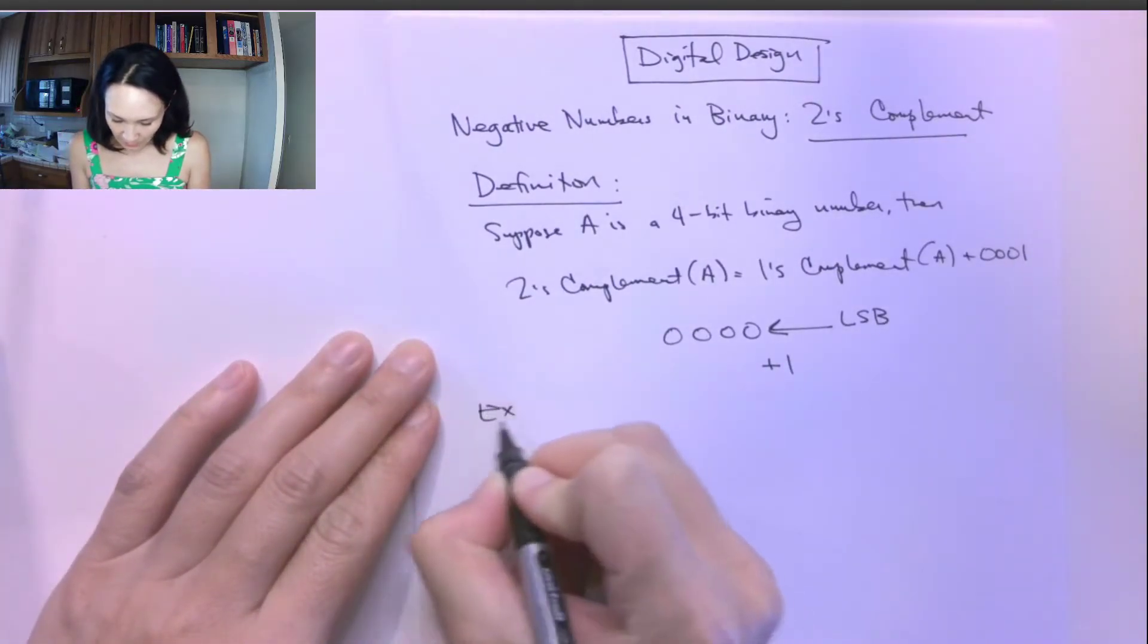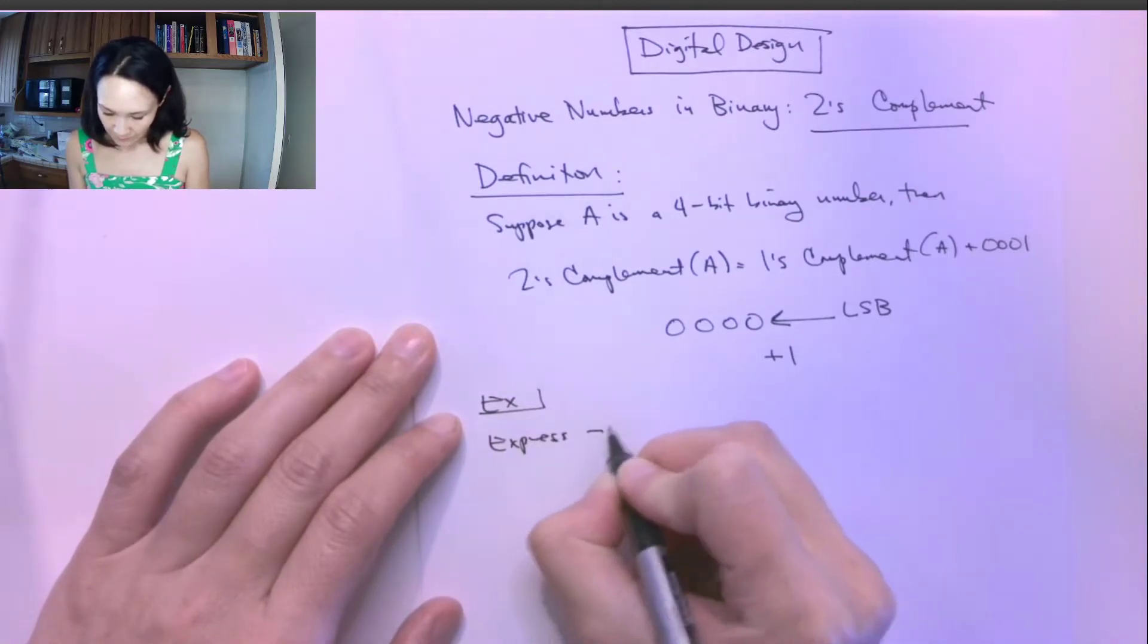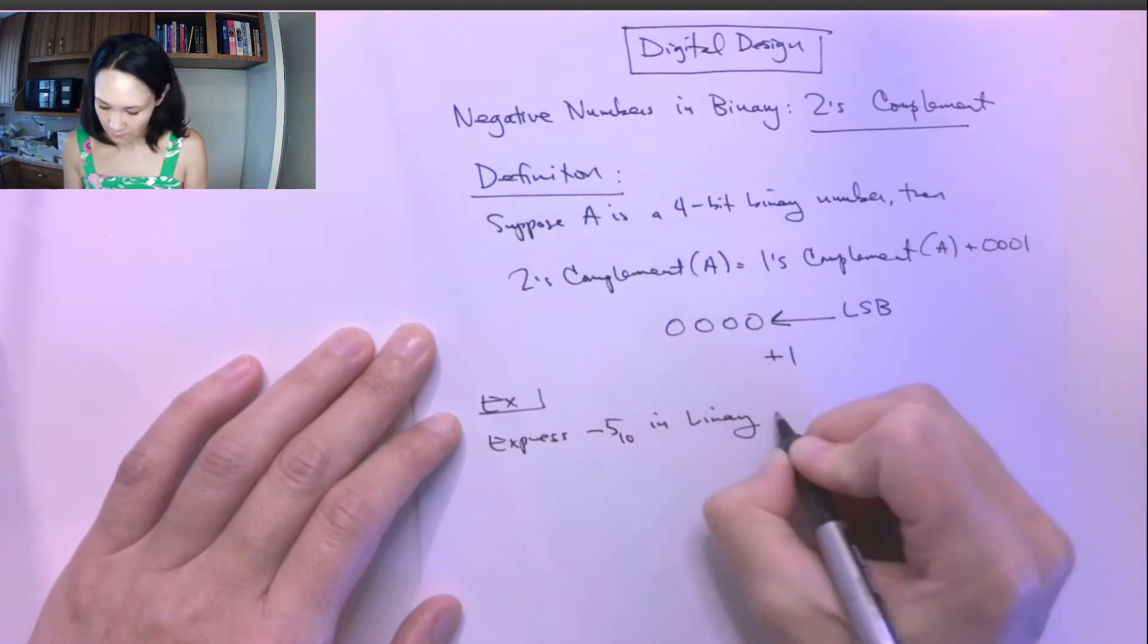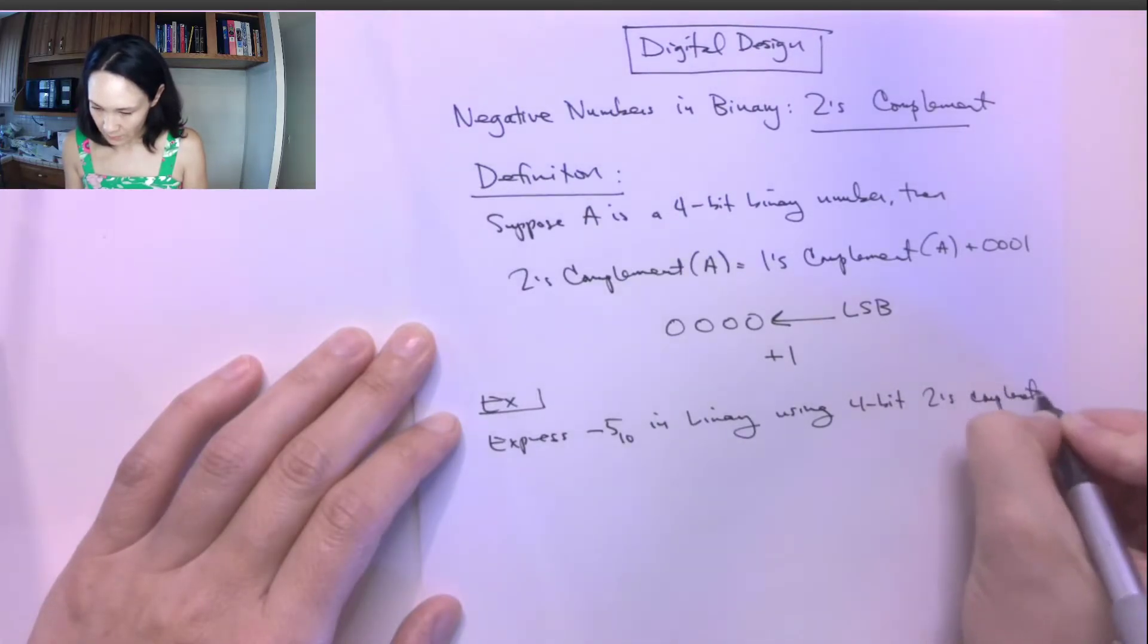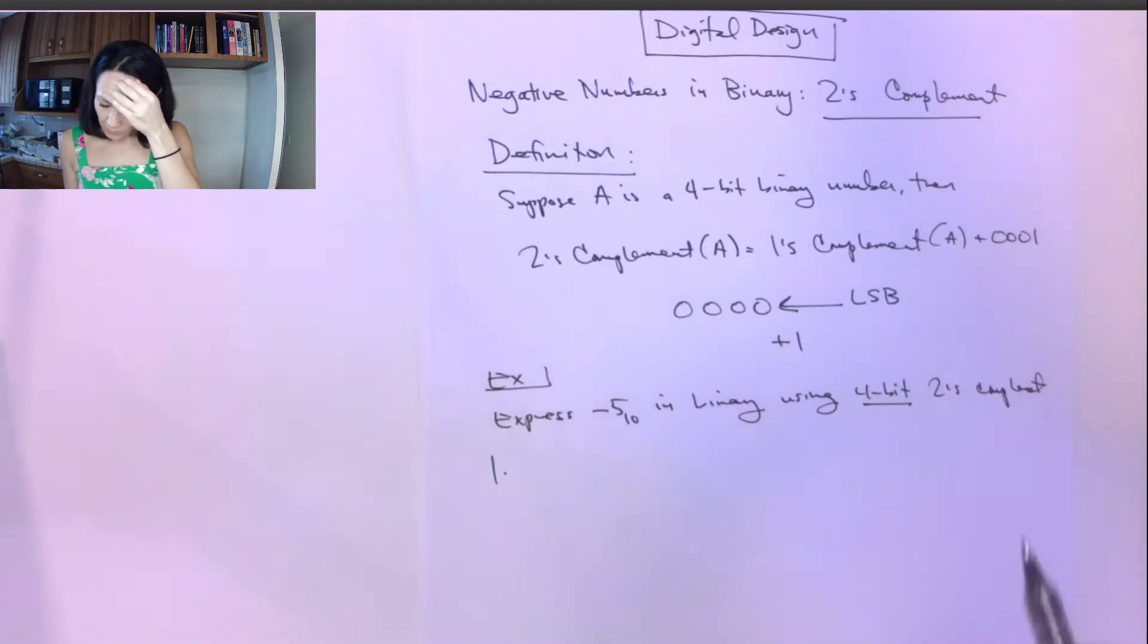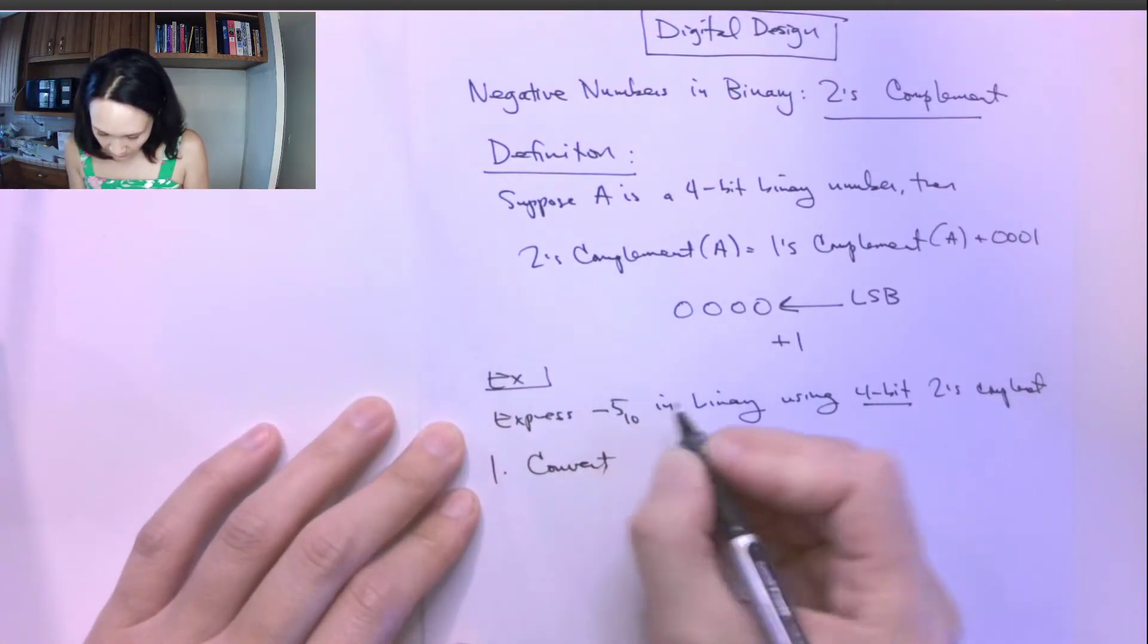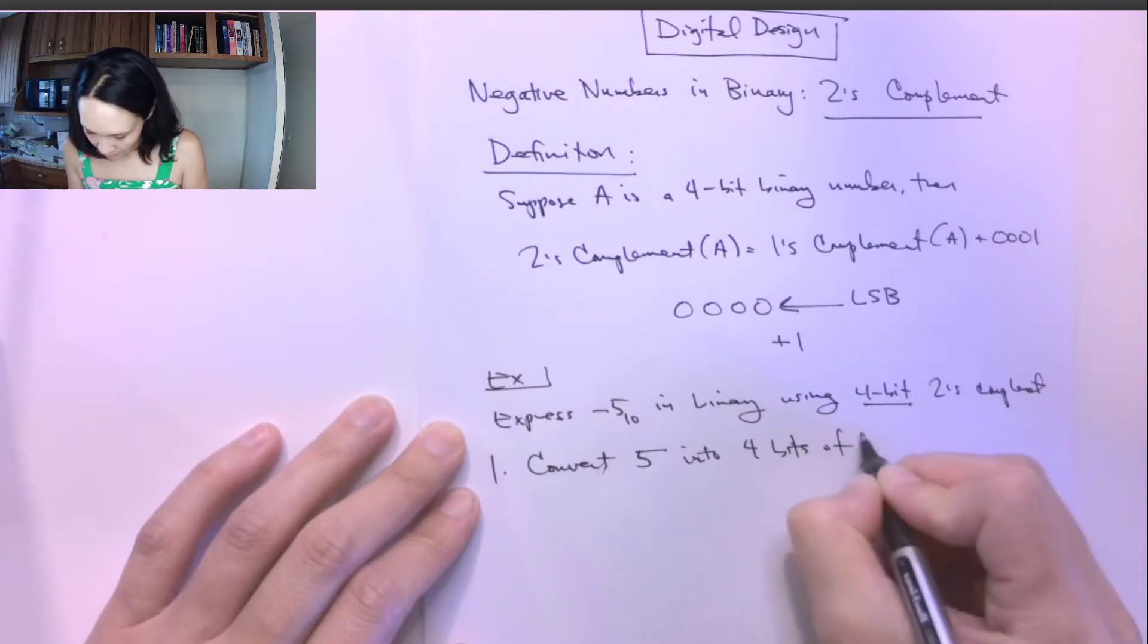Let me show you an example of how this works. Let's say we want to express negative five in decimal in binary form using four-bit two's complement. So the first step is we've already specified that we have four-bit two's complement here. So we're going to convert this five to four bits of binary. So convert the magnitude of our number, just this five, into four bits of binary.